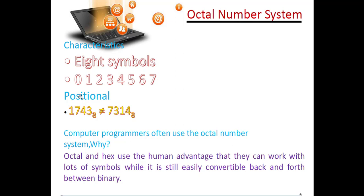The octal number system is also a positional number system, like decimal and binary. If we swap the position of some symbols in a number, the number changes. For example, 1743 is not equal to 7314, although the symbols are the same — their positions are different, so the numbers are not the same.